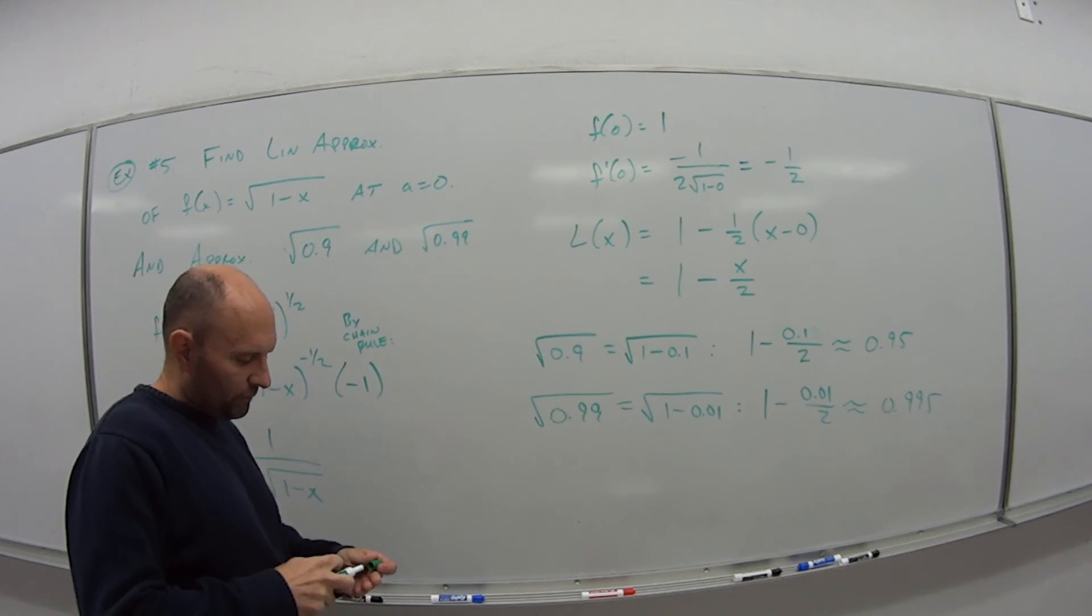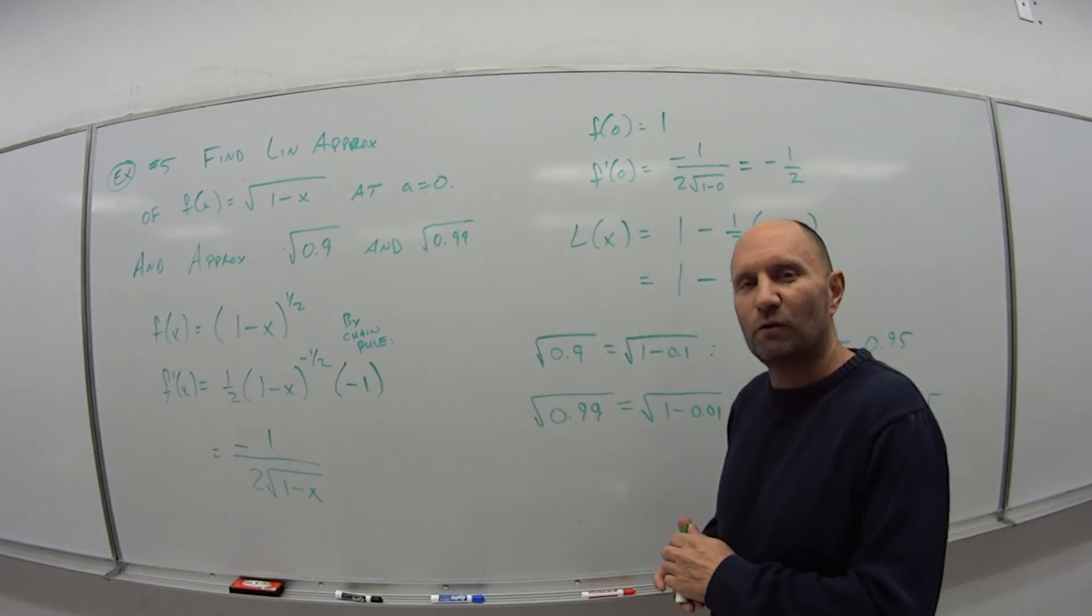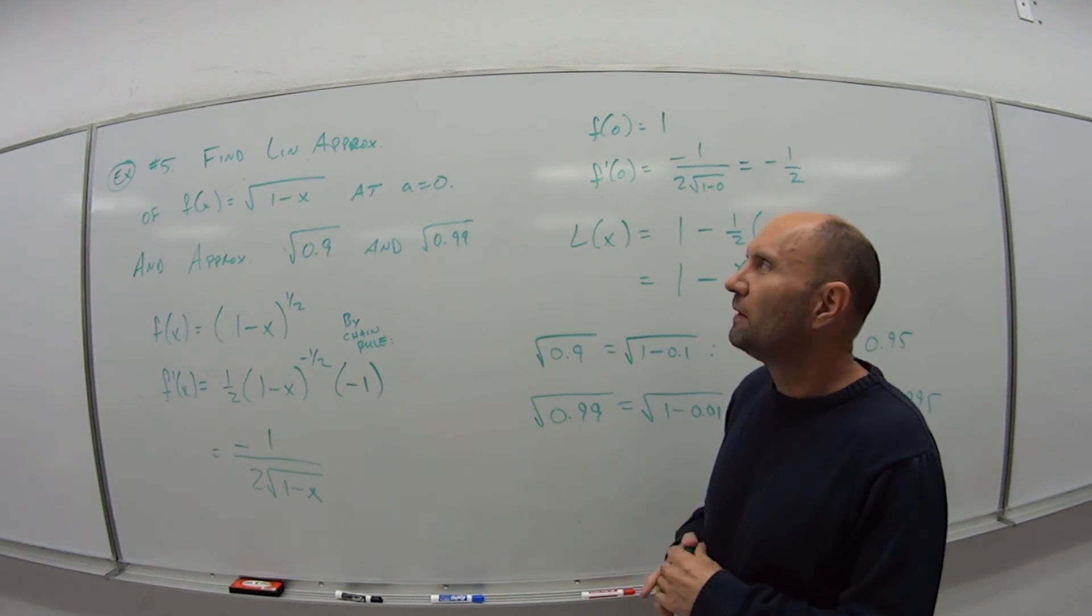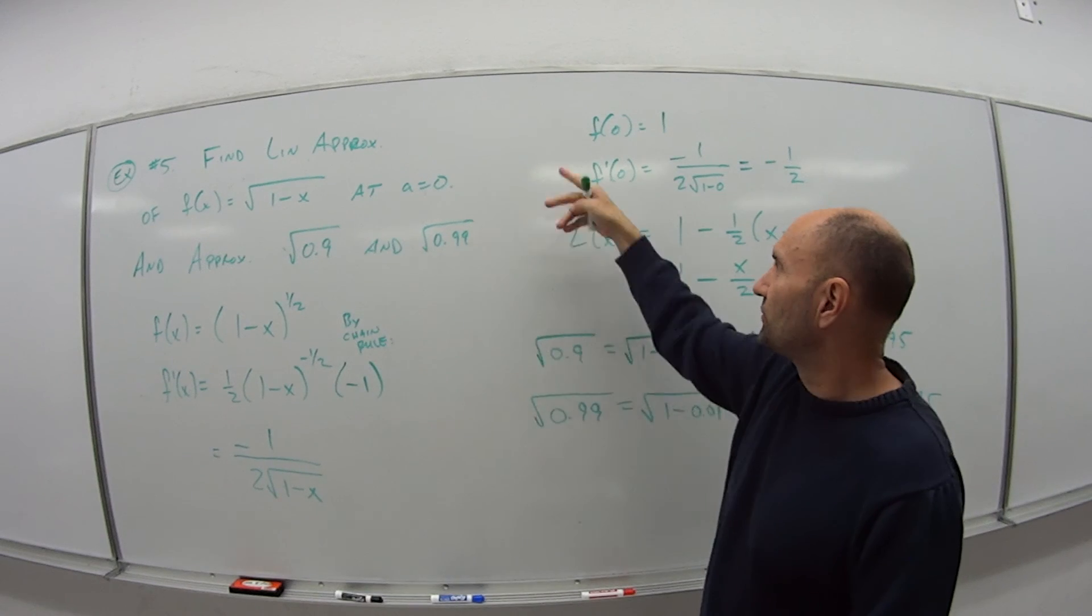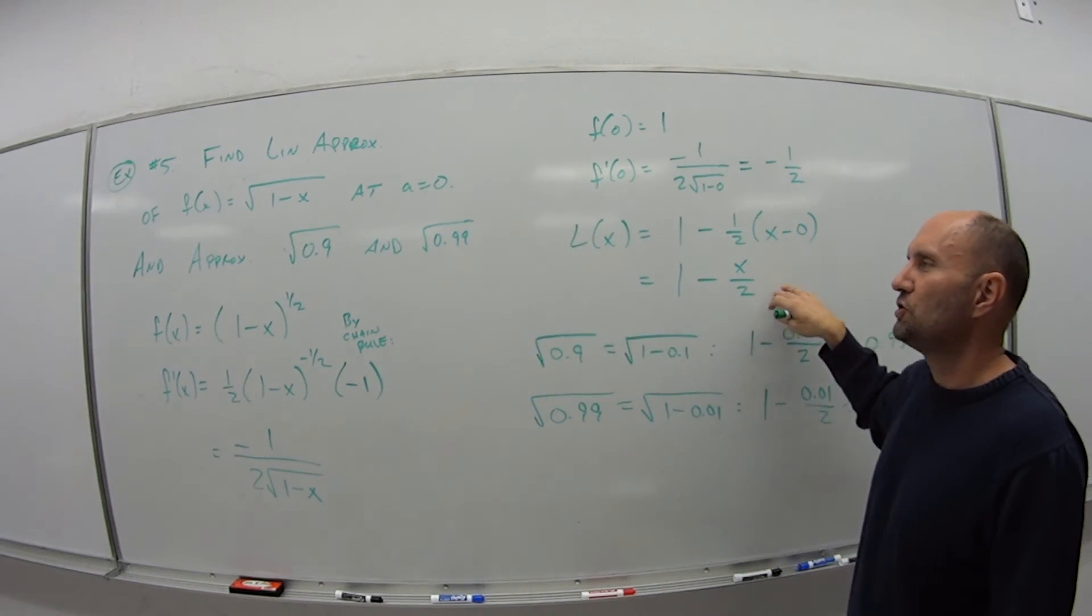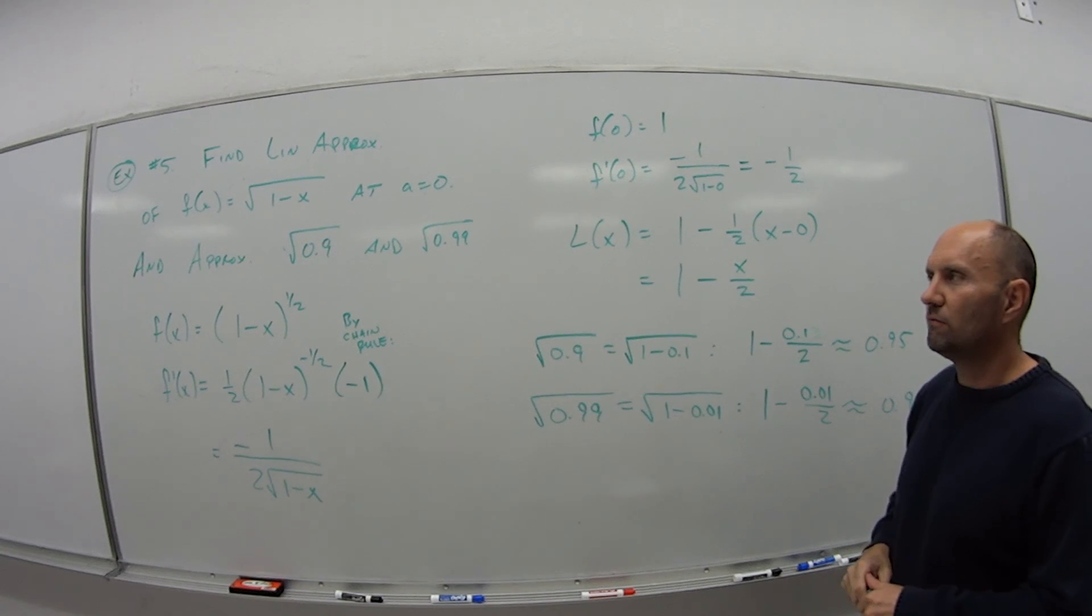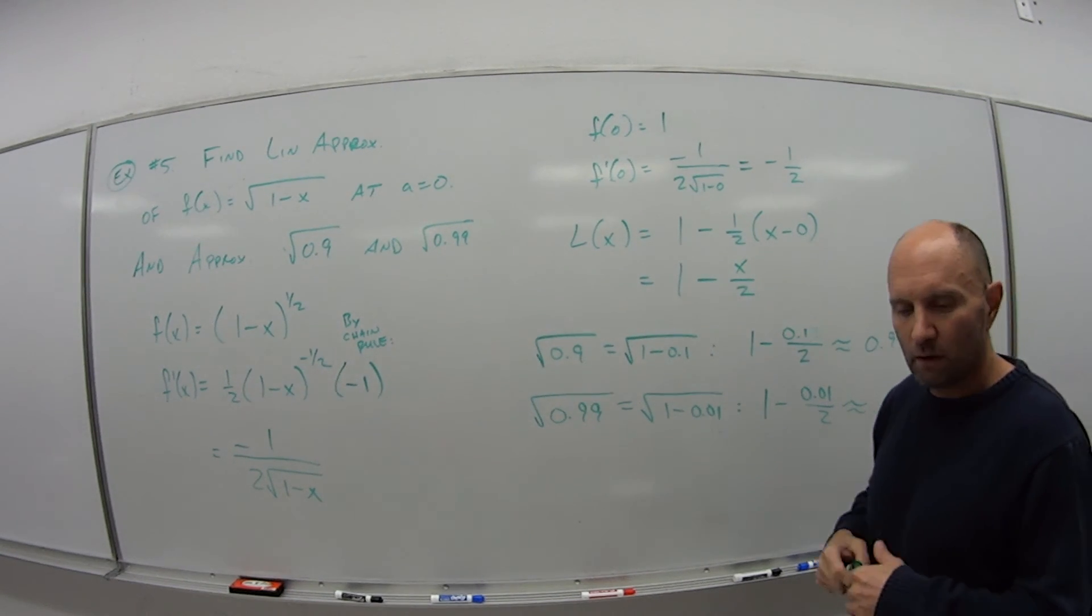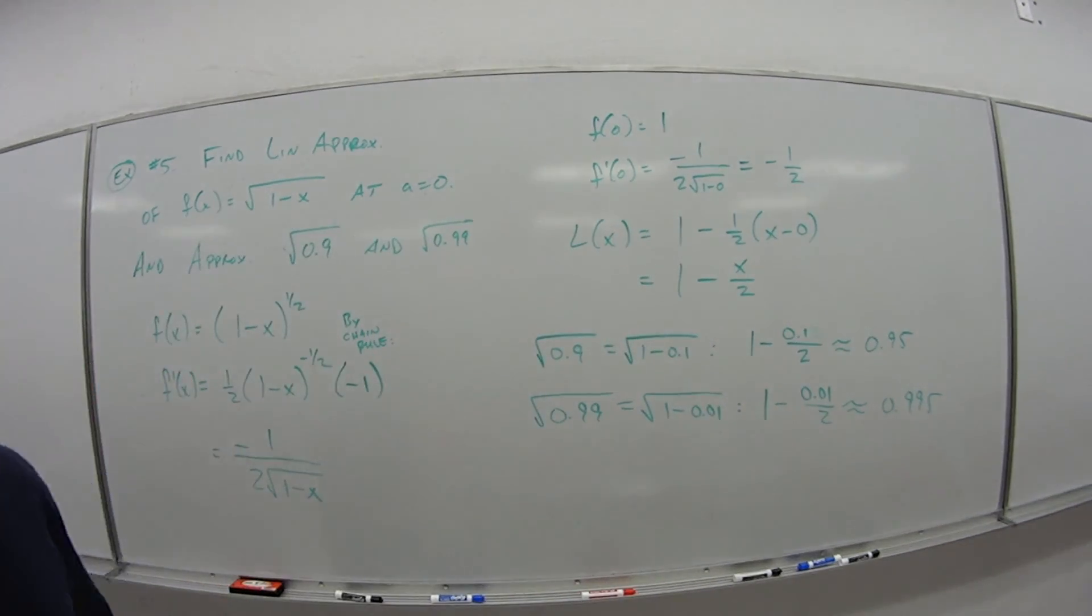So that wraps up video 2. That wraps up section 2.8, which finally now wraps up chapter 2. We looked at linear approximation. How do we solve to get the linear approximation? Then how can we use it to estimate given values for us? So come on back. We'll start chapter 3. Thanks.